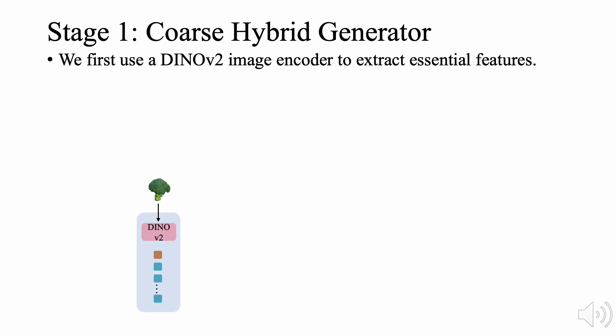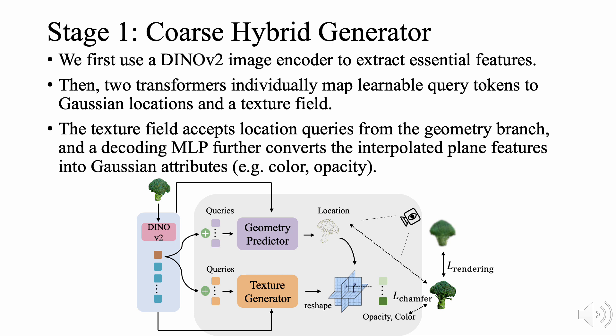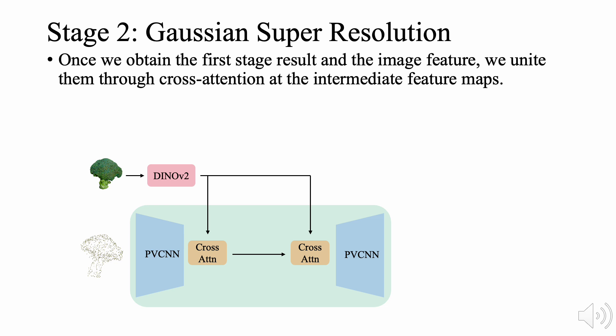Let's first take a look at our coarse hybrid generator in Stage 1. We first use a DINOv2 image encoder to extract essential image features. Then, two transformers individually map learnable query tokens to Gaussian locations and a texture field. The texture field accepts location queries from the geometry branch, and a decoding MLP further converts the interpolated plane features into Gaussian attributes.